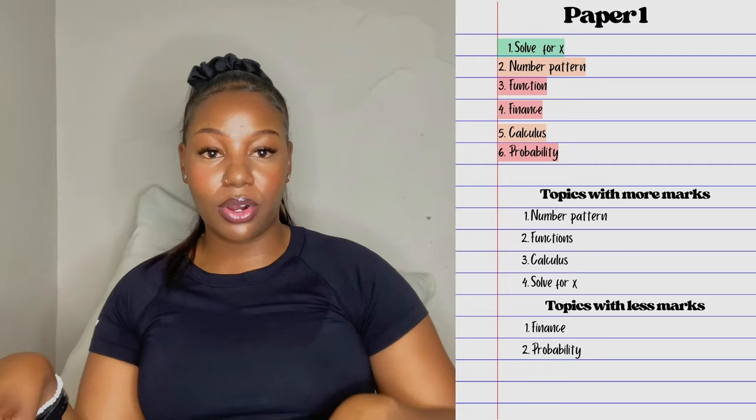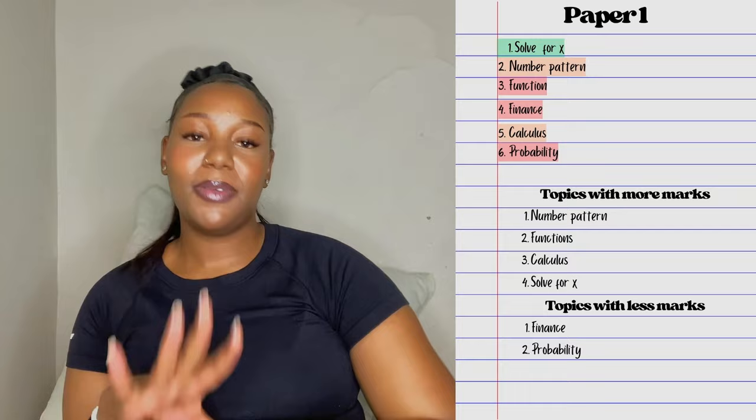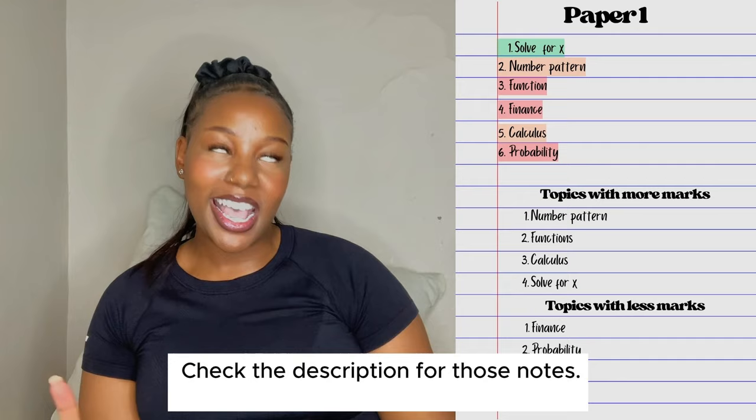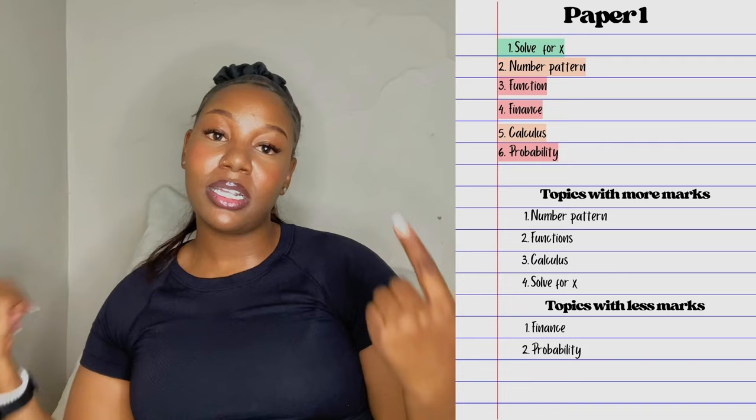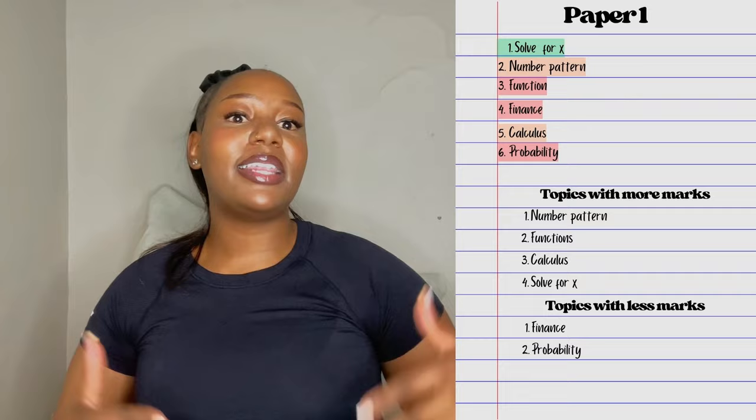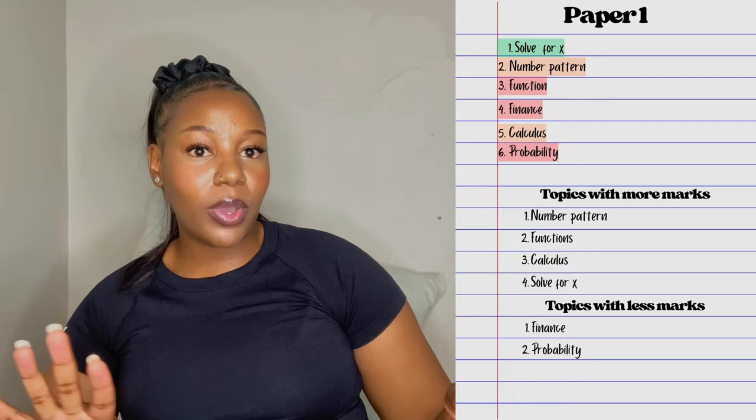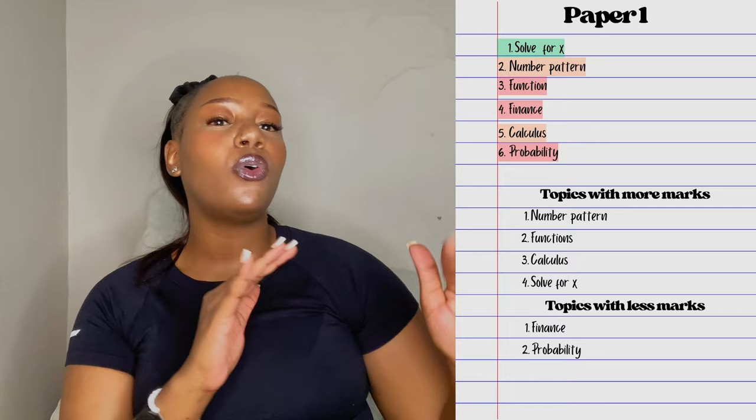After finishing the red sections with the most marks, move to the orange sections that also have the most marks. Once you've done those, then move to the red topics with fewer marks, then back to the remaining orange topics. That way, you know you're mastering the topics that carry the most marks first before moving on to those with fewer marks.